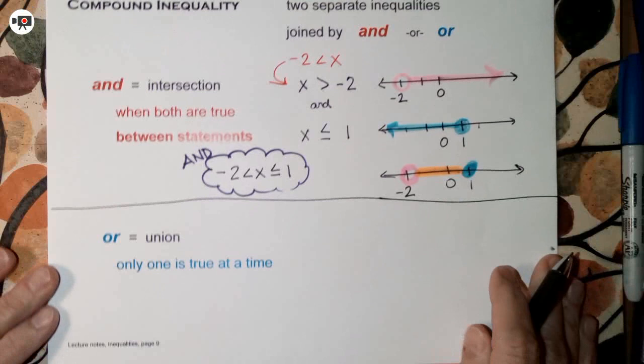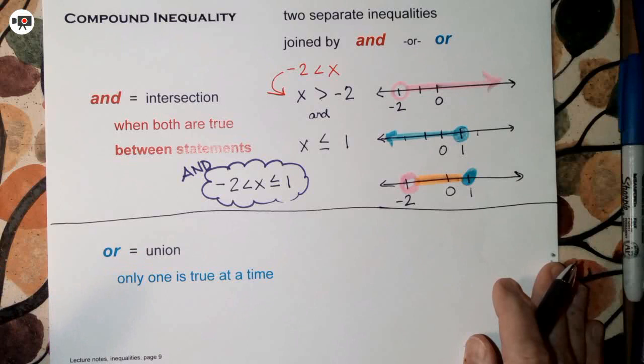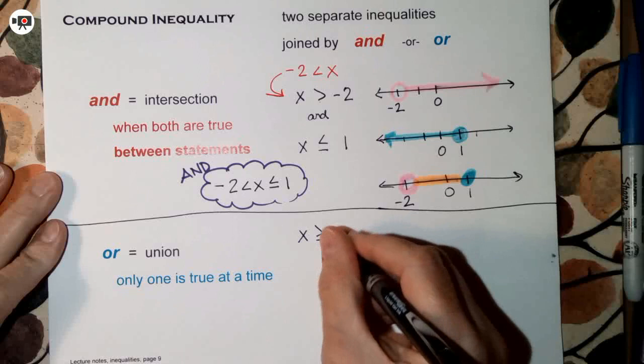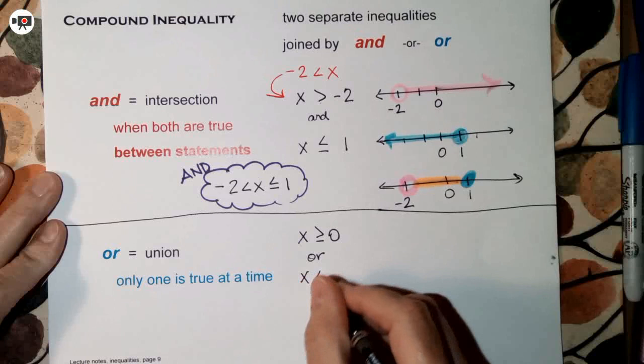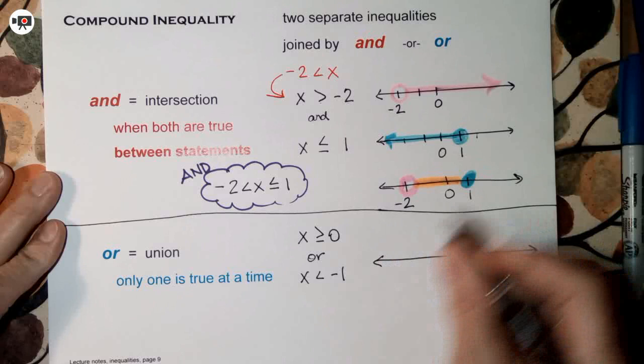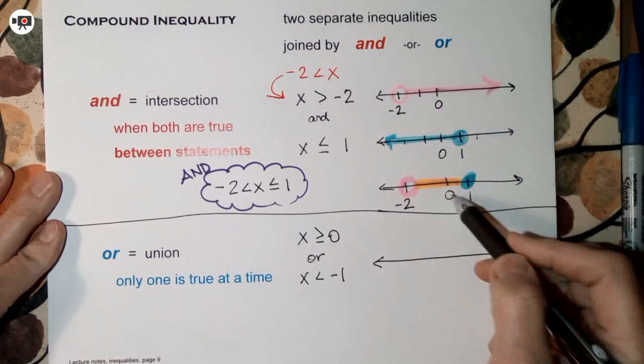Now let's talk about OR statements — two separate inequalities joined by OR, where only one needs to be true at a time. For example: x is greater than or equal to 0, or x is less than negative 1. We'll put both on the same graph, and I'll show you how it's composed.